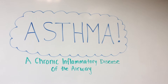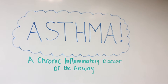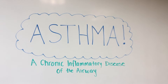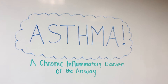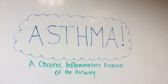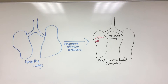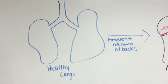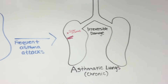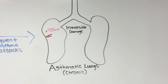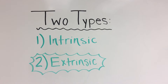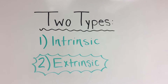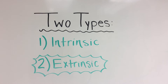Asthma is a mismatched disease that causes periodic episodes of severe but reversible bronchial obstruction in people with hypersensitive or hyper-responsive airways. Frequent and repeated attacks of acute asthma may lead to irreversible damage in the lungs or the development of chronic asthma. Acute attacks may be superimposed on the chronic condition. There are two types of asthma, intrinsic and extrinsic, and today in this presentation we'll be focusing on extrinsic asthma.